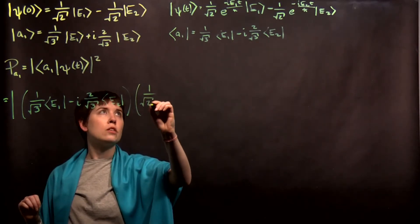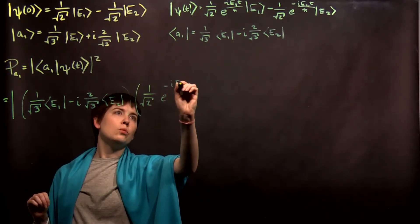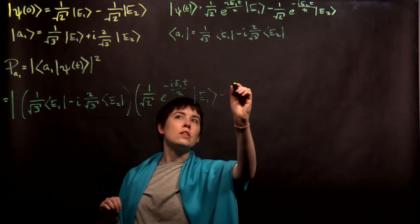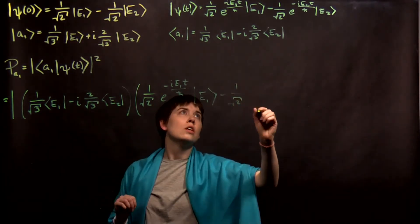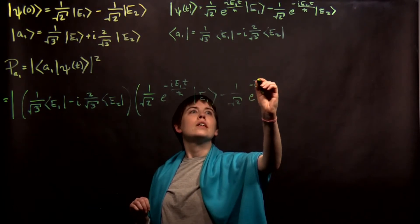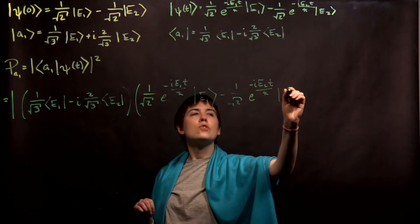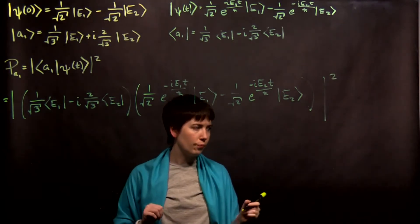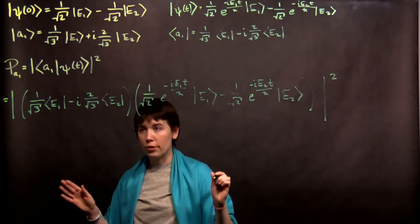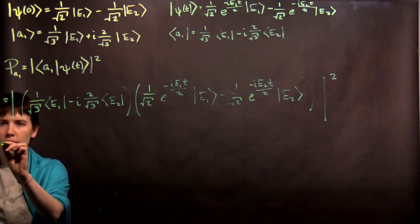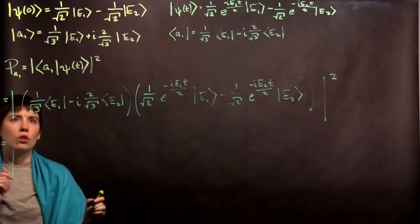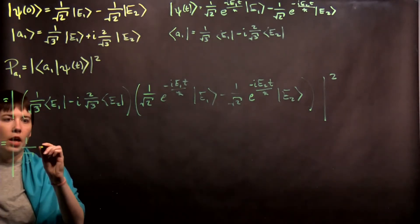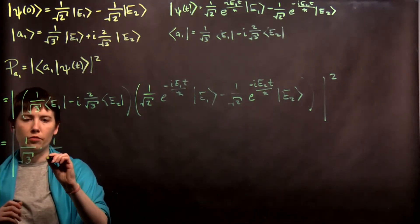So now, I'm bringing down my psi of t term. e to the negative i e1 t over h bar. And then e1 ket minus 1 over square root of 2. e to the negative i e2 t over h bar. And then e2 ket. And then big ol' parentheses and then magnitude squared. Okay, so I'm going to work within the magnitude squared for now. But I am going to bring out some of these coefficients. So you can see that both of these have a 1 over square root of 3, so I can bring that out front. And both of these have a 1 over square root of 2, so I can bring that out front.